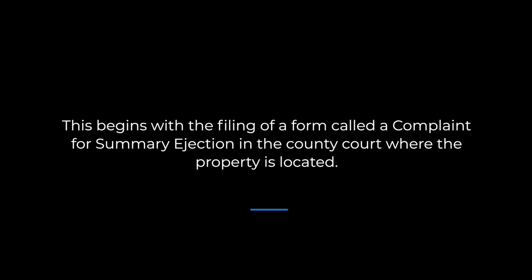If after the allotted time period in the notice the tenant has still not resolved the matter, the landlord can initiate an eviction in the local court. This begins with the filing of a form called a complaint for summary ejection in the county court where the property is located. The clerk will then issue a summons, which is a document that sets a time and place for a court hearing. This will be scheduled within 7 days, not including weekends and legal holidays.